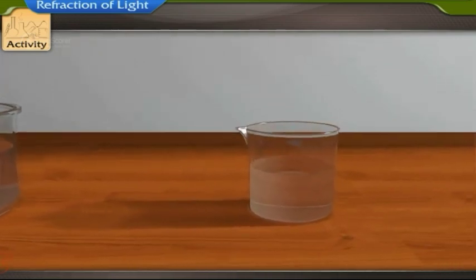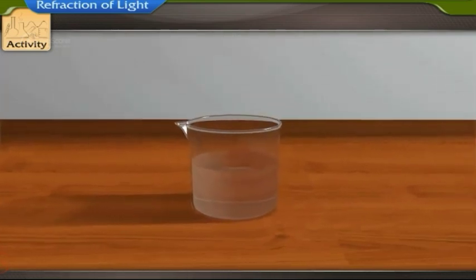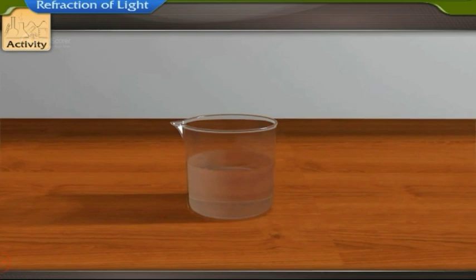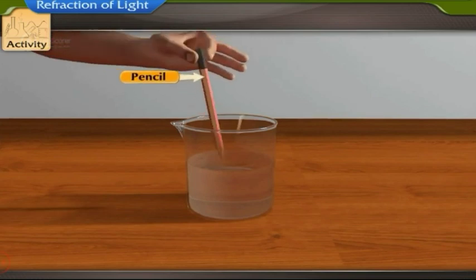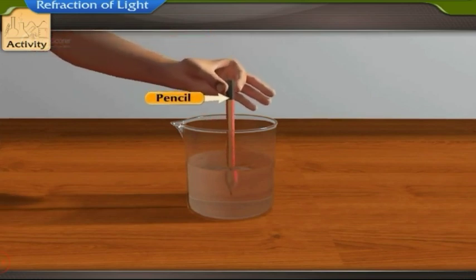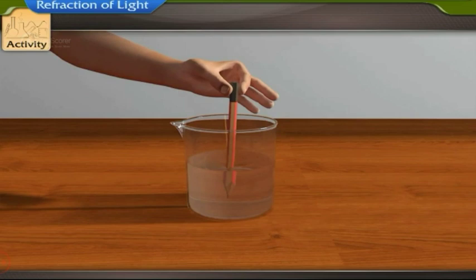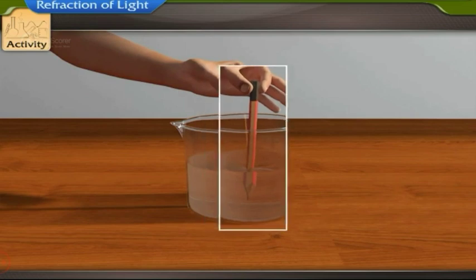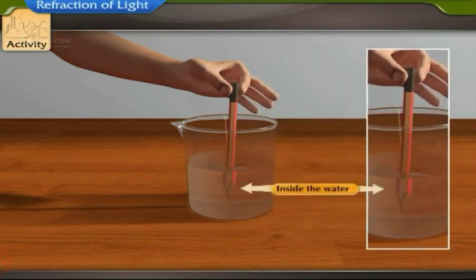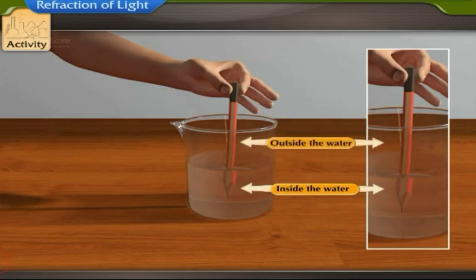Now take a beaker filled with water. Take a pencil and place it vertically in water such that some part of the pencil is immersed in water. Look at the pencil carefully. You will observe that the thickness of the pencil inside the water appears to be more than the thickness of the part of the pencil that is outside the water.